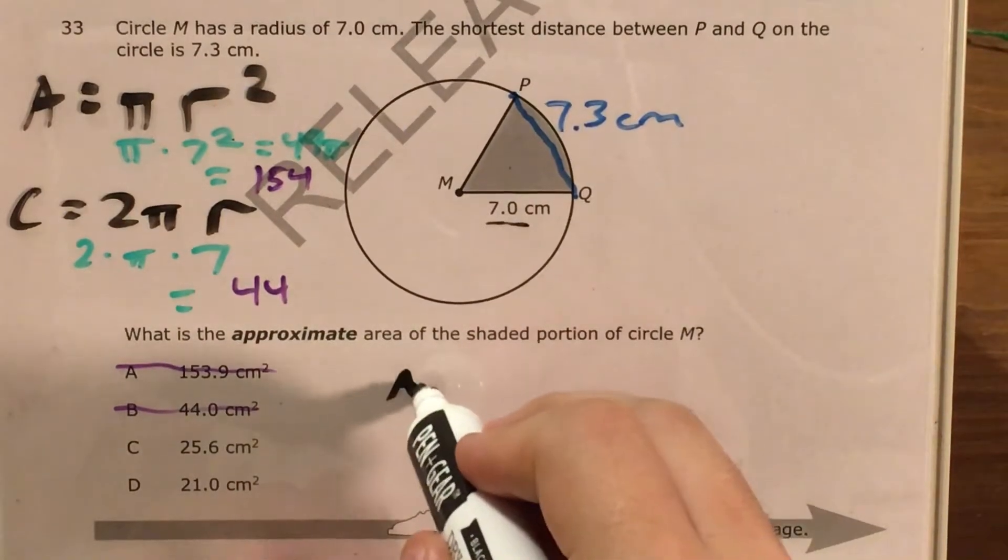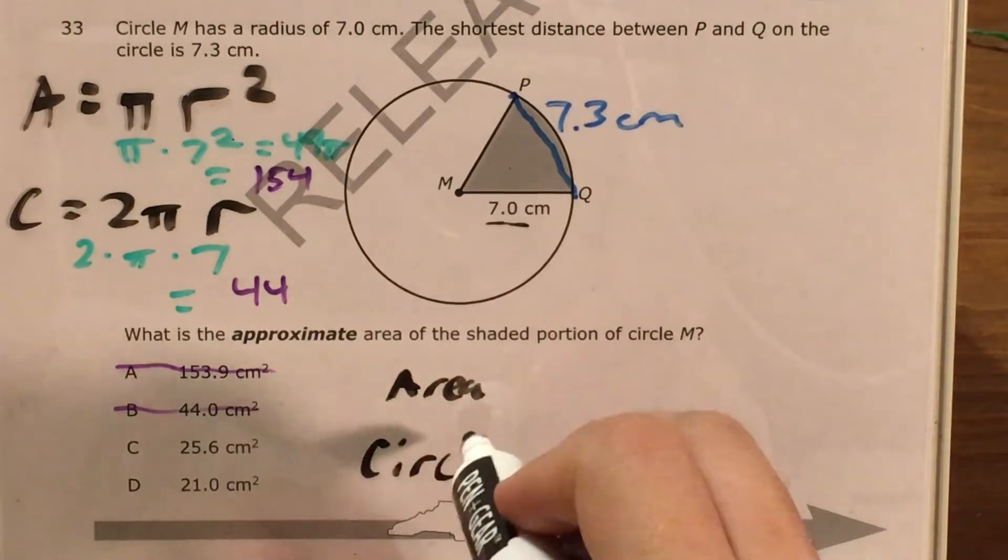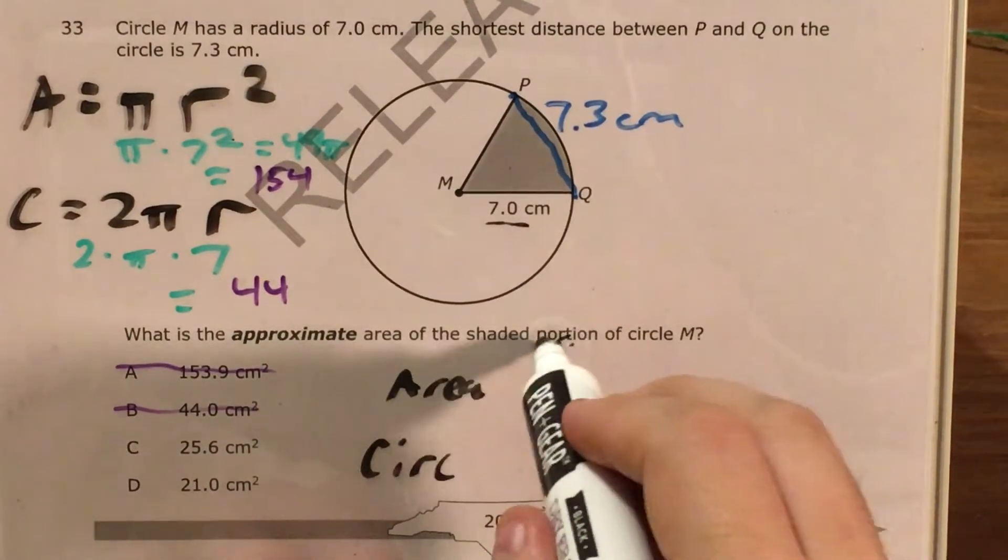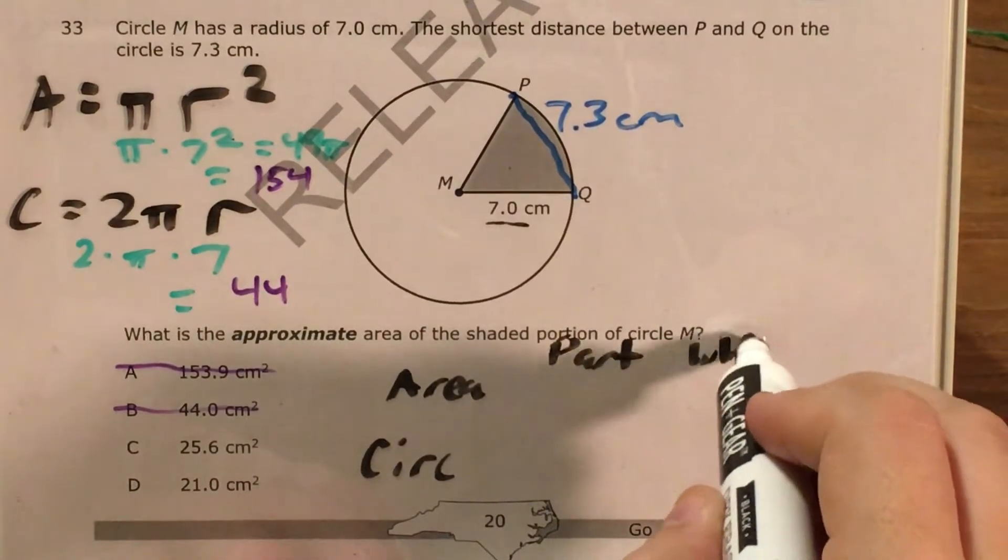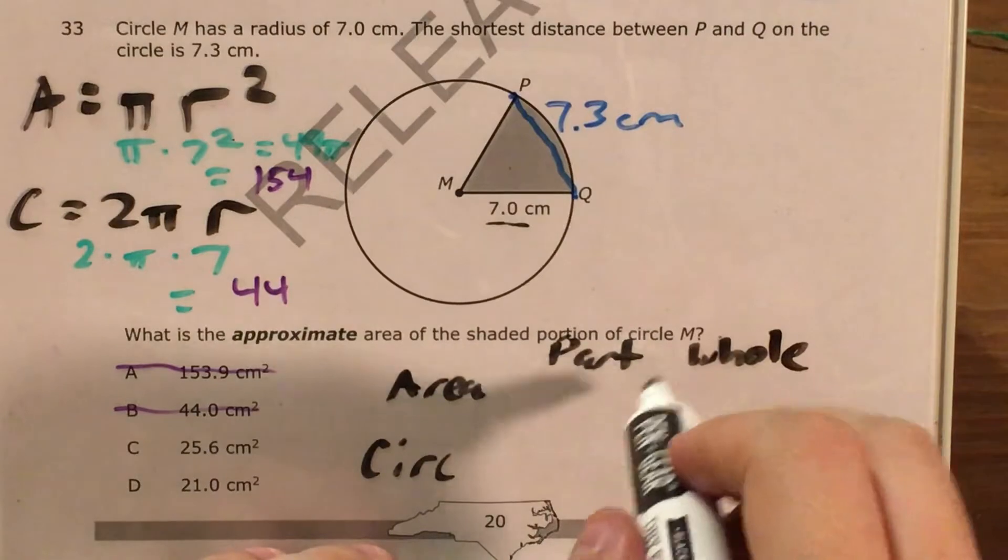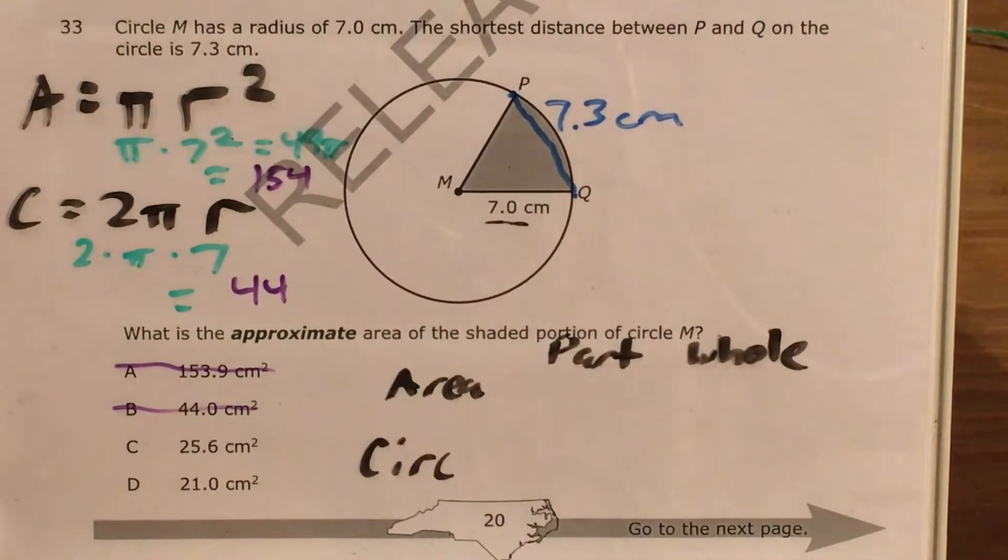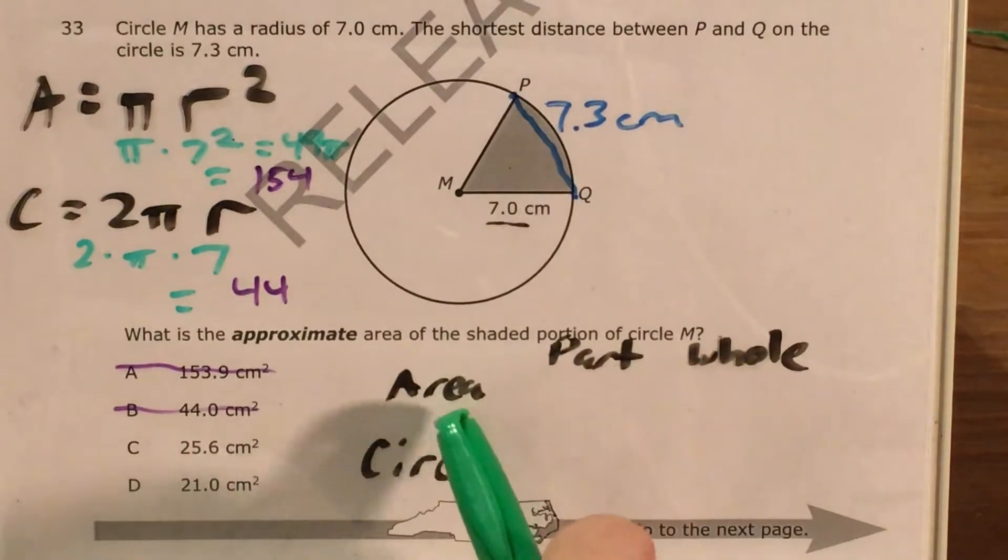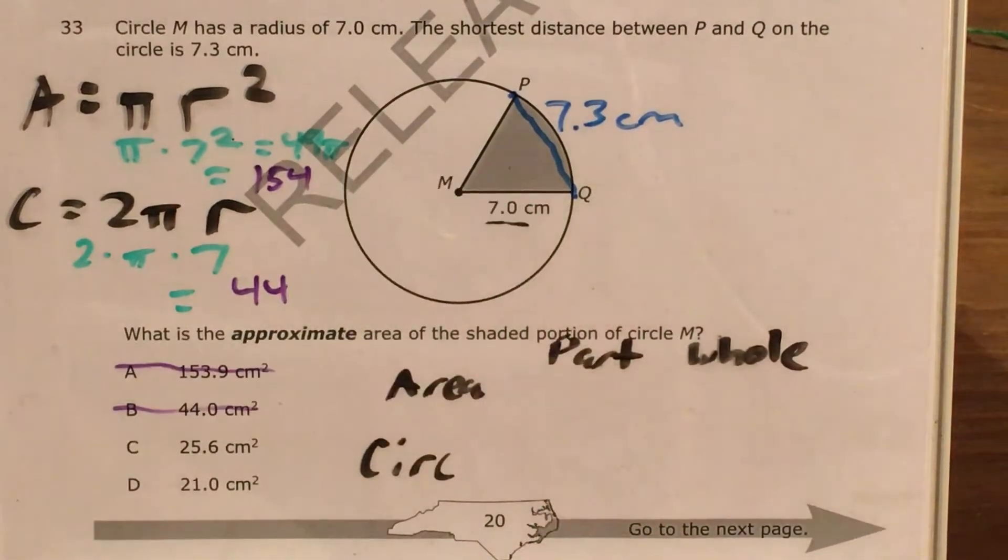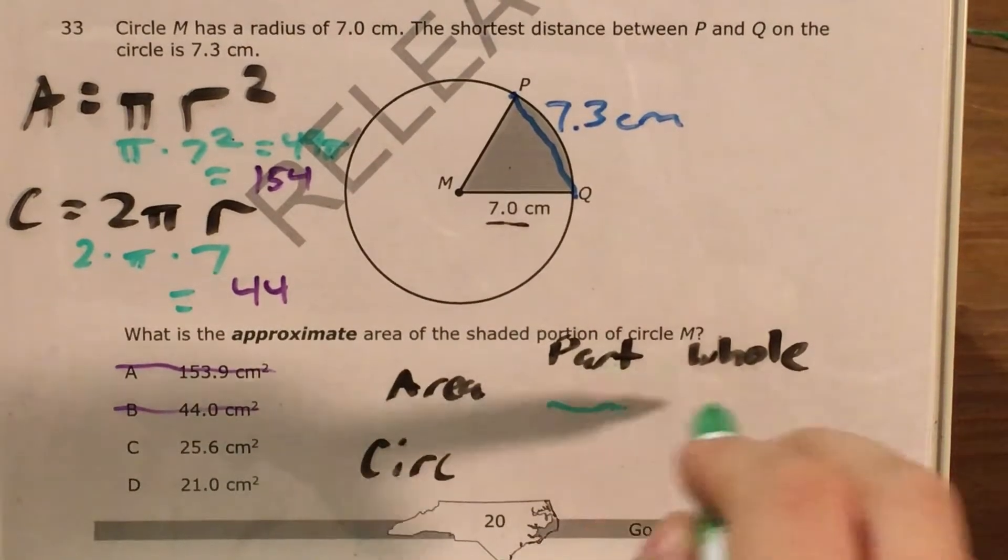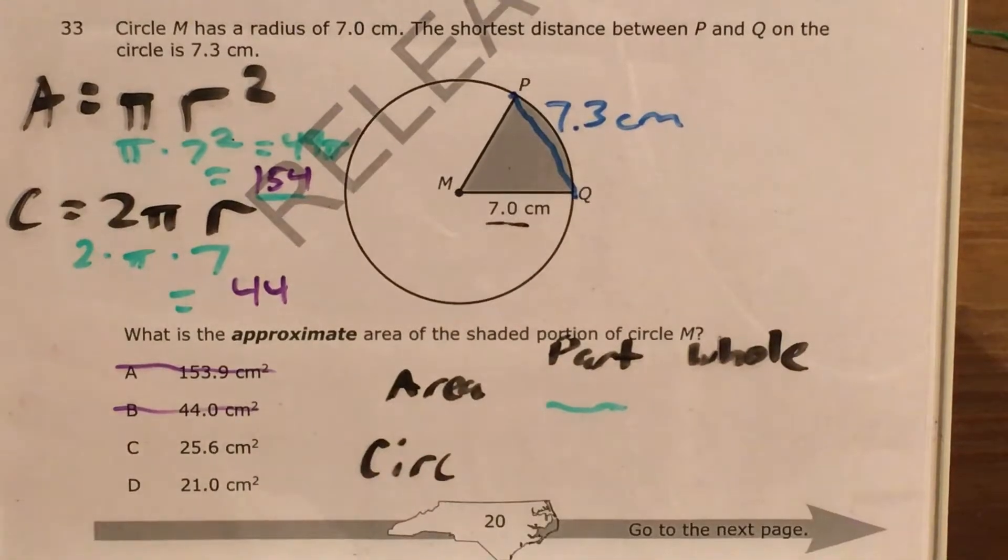I'm going to call the first row area, second row circumference. And up here, my columns I'm going to call part and whole. Now, this is just a one word way to say that if I'm looking at my area, my part of that circle in terms of area is this shaded portion, which I don't know. But then the whole area I found over here, that's 154.